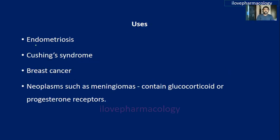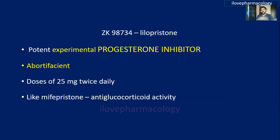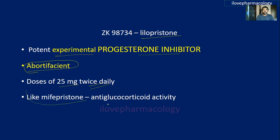Other uses of mifepristone include endometriosis, Cushing's syndrome, breast carcinoma, and neoplasms such as meningiomas containing glucocorticoid or progesterone receptors, owing to its anti-progesterone and anti-glucocorticoid activity. A newer drug, lelopristone, is a potent experimental progesterone inhibitor, also an effective abortifacient similar to mifepristone, at a dose of 25 mg twice daily, and similarly possesses anti-glucocorticoid activity.